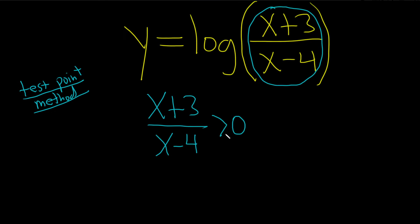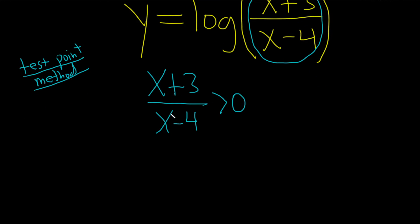The second step in the test point method is to set each piece equal to 0. So we set the numerator equal to 0, and we set the denominator equal to 0. Again, this is just the second step. This doesn't follow algebraically from what's written here. It's not an algebraic step, it's just following the steps in the method. So step 1, make sure you have one term and 0, and done.